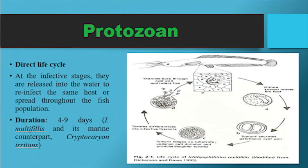Protozoans have direct life cycles, meaning only one host is needed to complete their life cycle. At the infective stages, they are released into the water to reinfect the same host or spread throughout the fish population. Its duration only lasts 4 to 9 days. An example is Ichthyophthirius multifiliis and its marine counterpart, Cryptocaryon irritans.